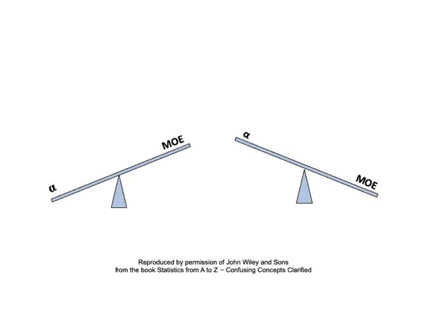This can probably more simply be portrayed by these two teeter-totters, or totter boards. A small value selected by the tester for alpha on the left results in a larger margin of error, and a large value for alpha on the right gives a smaller margin of error.